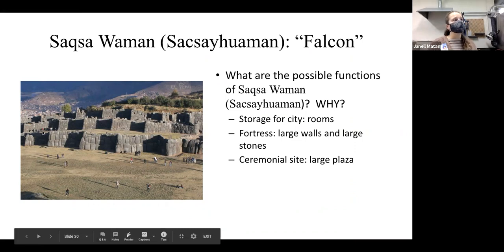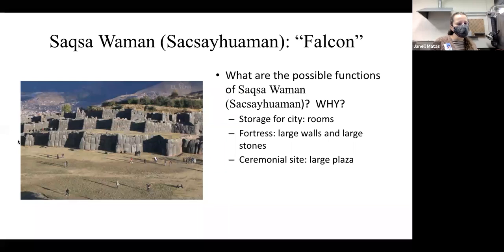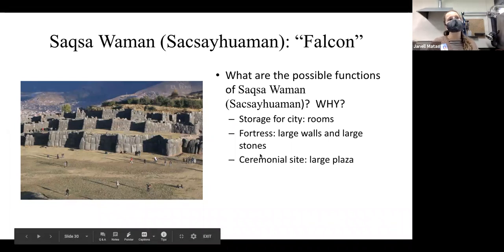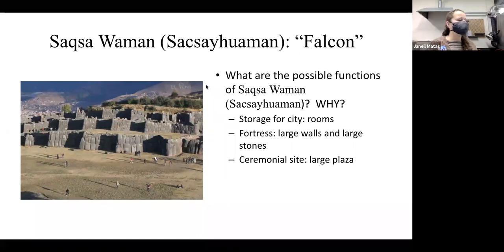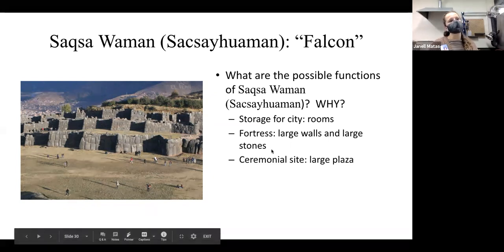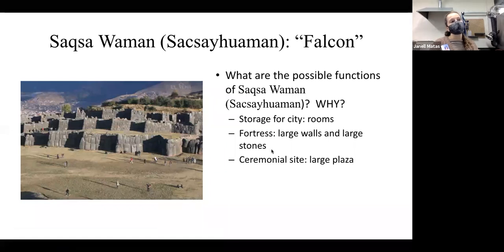We see a series of walls, but if we step back we see large open spaces — those are usually used for ceremonial sites where large populations can come together. The walls feel fortress-like, and there are rooms that could have been used for storage of food resources and ceremonial equipment. At the end, when the Spanish were coming in, that's where they would have hidden armies and weapons. But at the beginning, it was probably more of a ceremonial spot than a fortress.